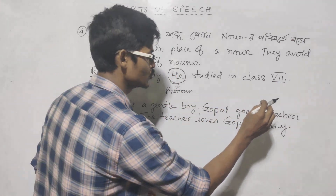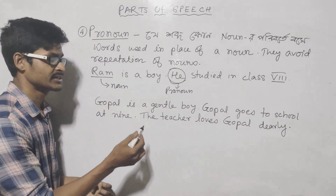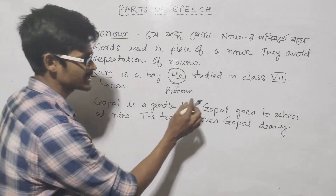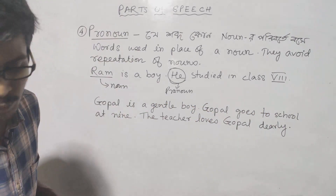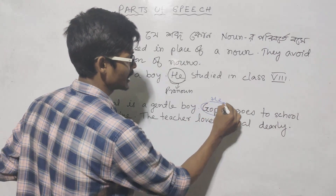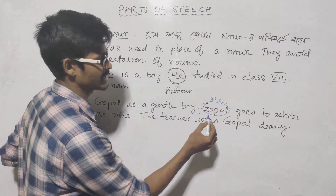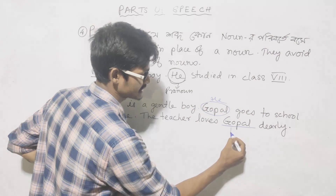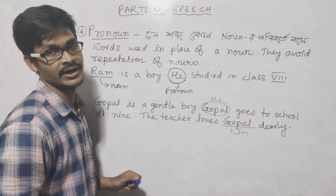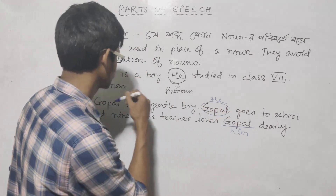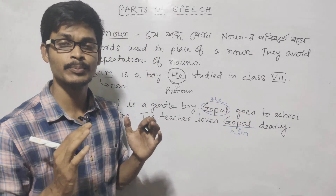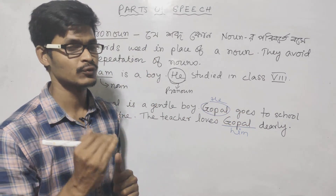For example: 'Gopal goes to school at 9, the teacher loves Gopal daily.' Instead of repeating Gopal, we say 'he goes to school at 9, the teacher loves him dearly.' Here 'he' and 'him' are pronouns used in place of Gopal. That is how pronouns work.